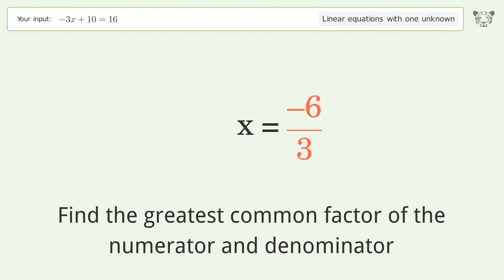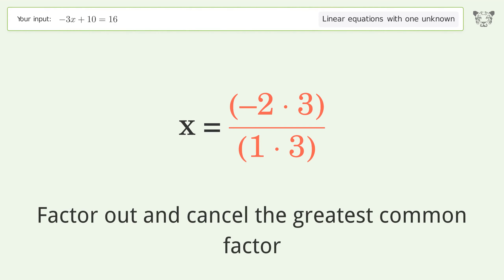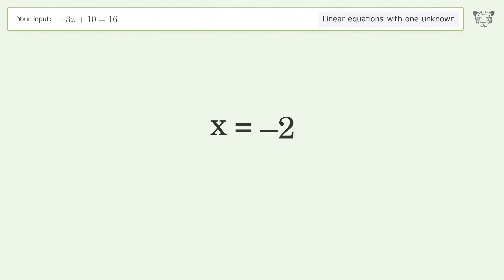Find the greatest common factor of the numerator and denominator. Factor out and cancel the greatest common factor. And so the final result is x equals negative 2. Woo!